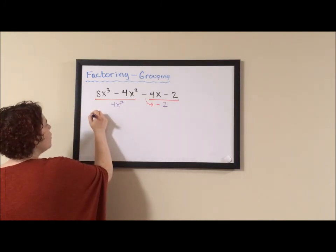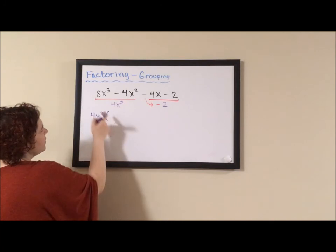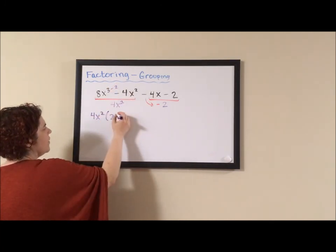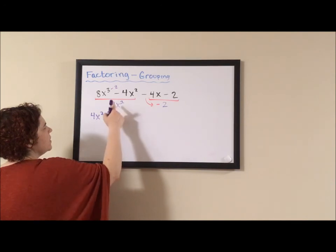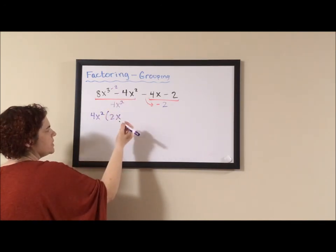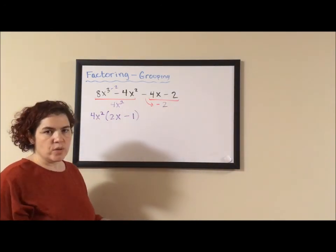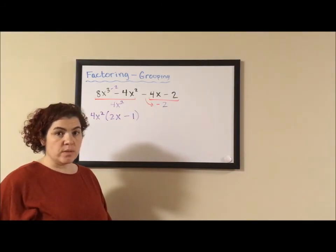If we pull out a 4x squared, 8 divided by 4 is 2 and if we take away two of our x's we're left with 2x. 4x squared divided by 4x squared, anything divided by itself is 1. You cannot eliminate a term through division, you can only eliminate a term through addition or subtraction.